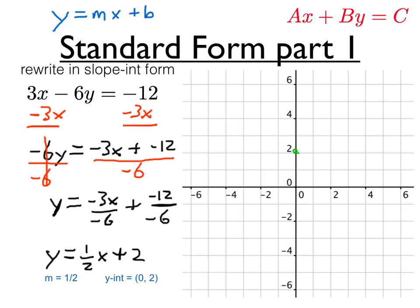First we'll start at the y-intercept, 0, 2. Now we'll apply the slope of 1 half. That slope of 1 half means we'll go up 1 and then right 2. Remember, it's rise over run, so vertical over horizontal. So up 1 and then over 2.